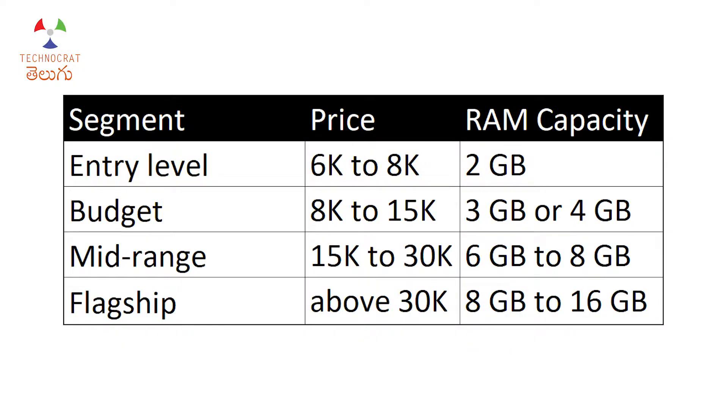If you are a heavy user in a given price segment, consider increasing your budget slightly. If a 4GB RAM variant costs about 1,000 to 1,500 rupees more than a 3GB variant, it is worth the upgrade. There are different price segments: entry-level phones in the 6,000 to 10,000 range have 2GB RAM variants (1GB variants are outdated). The budget segment from 7,000 to 15,000 has 3GB to 4GB RAM variants. Mid-range segment phones have 4GB, 6GB, and 8GB RAM variants. Flagship phones in the 30,000 and above range have 8GB, 12GB, and 16GB RAM variants.